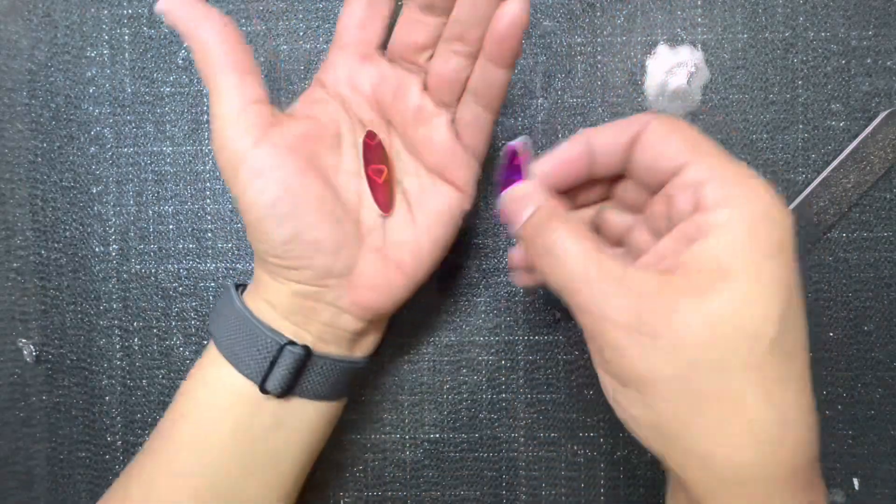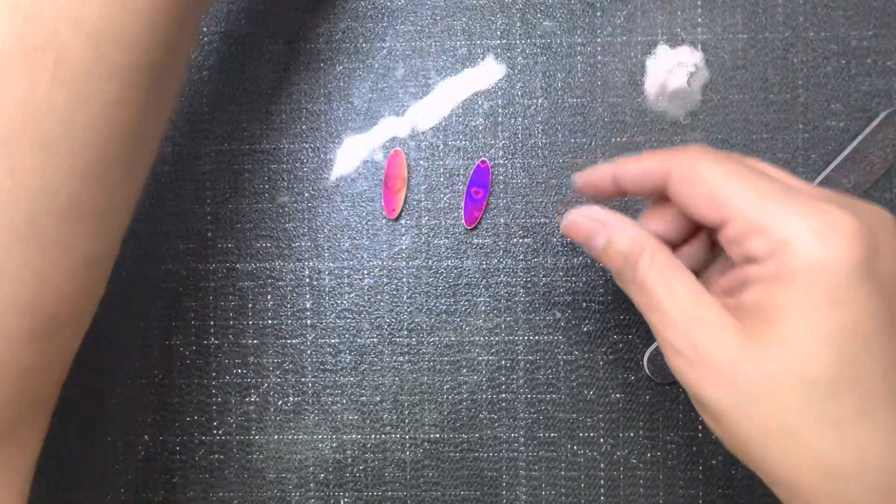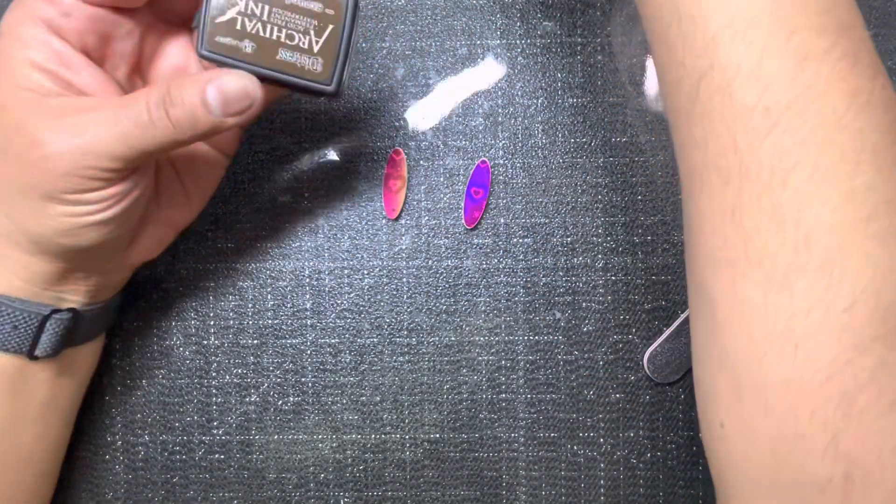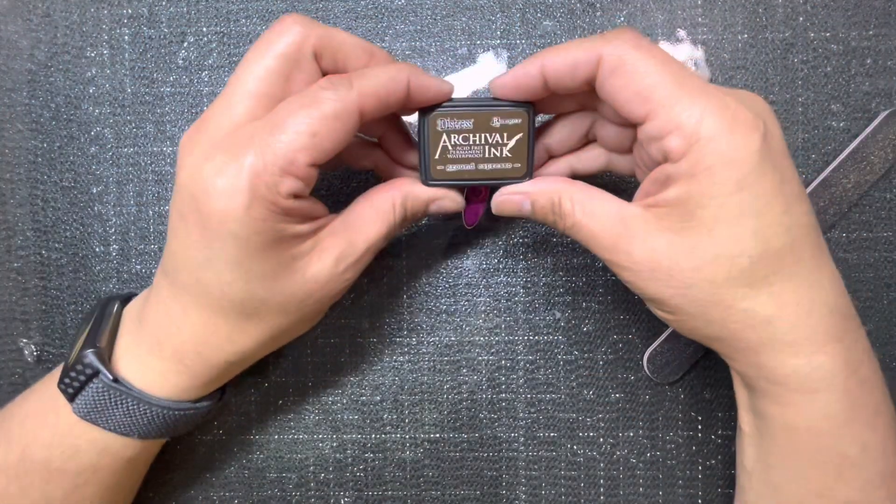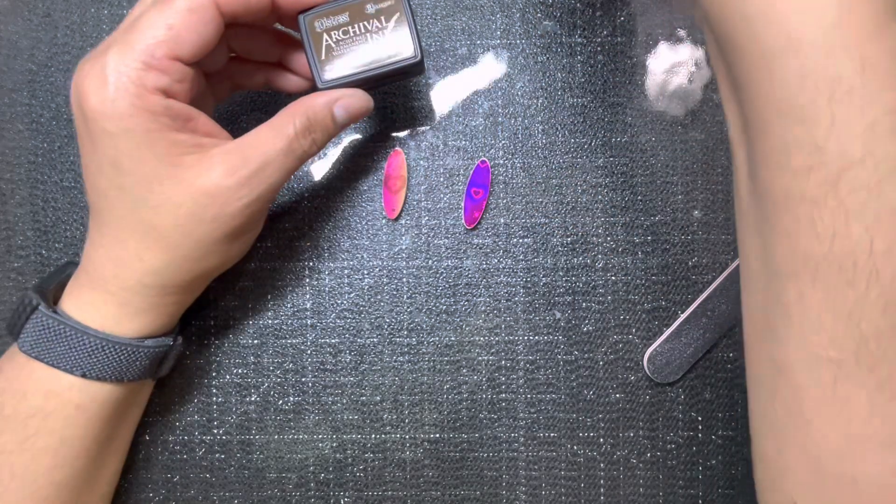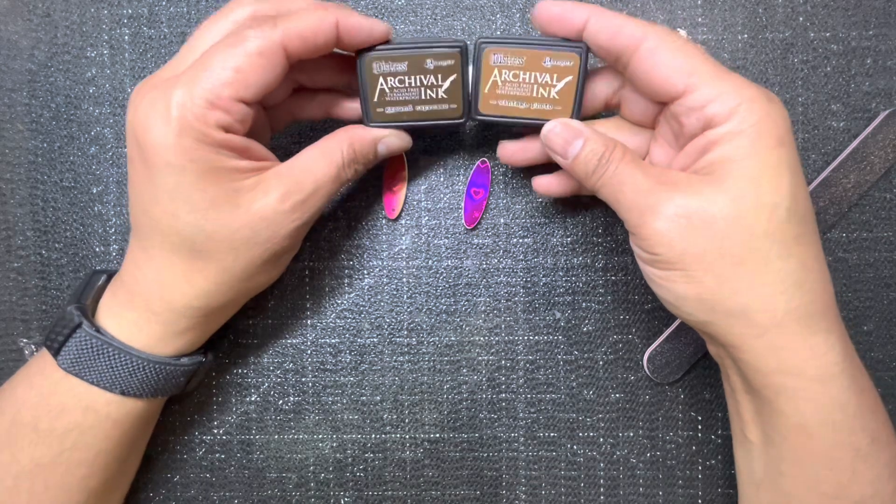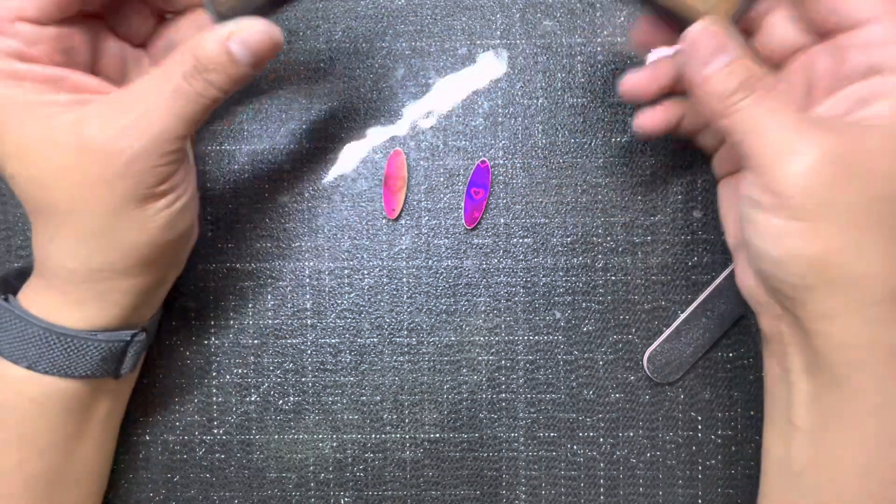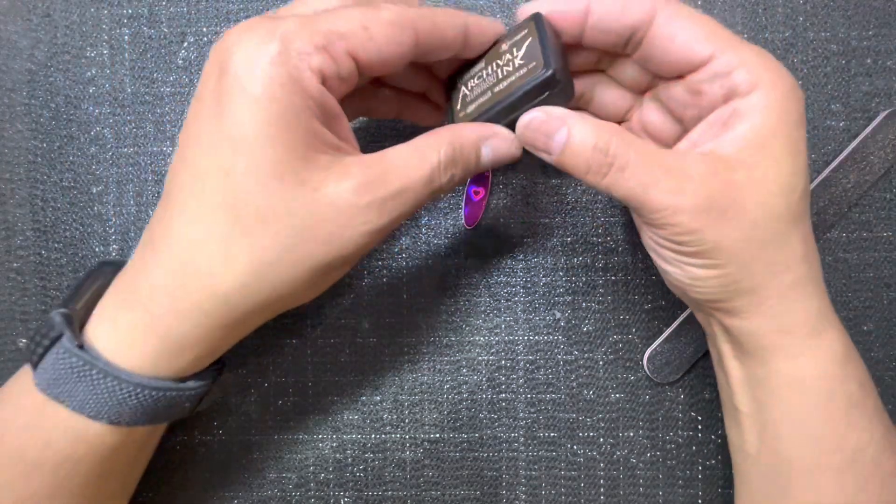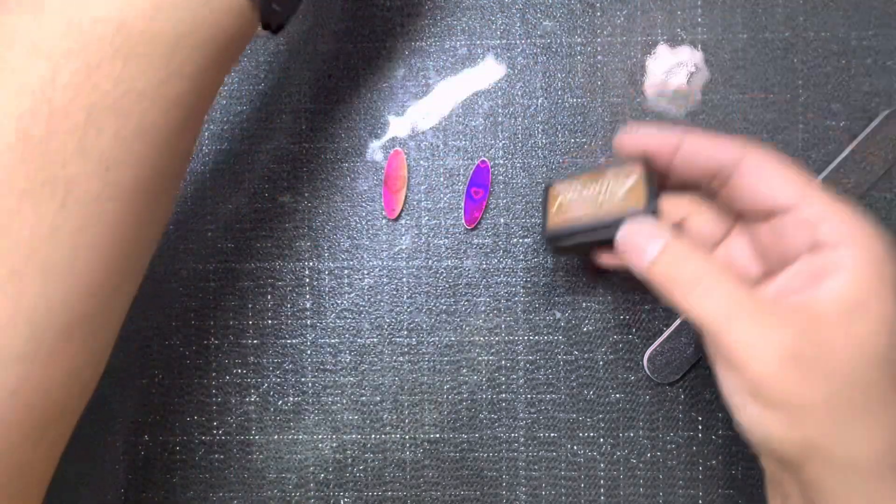All right, so I am going to stain. Let's see, we're going to use ground espresso. I like to go with the brown one, vintage photo. Whatever you choose, but I seem to go with the, I'm going to go with the lighter one today.